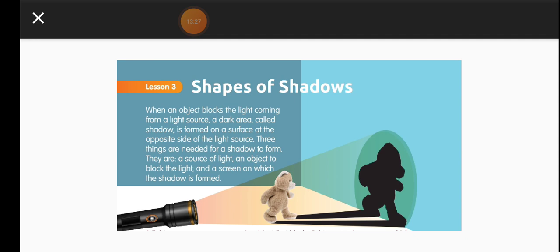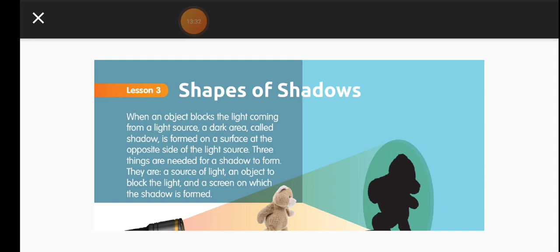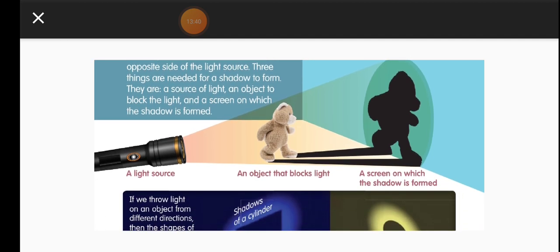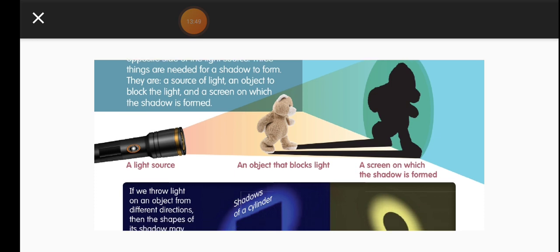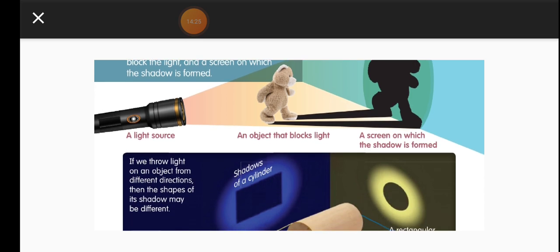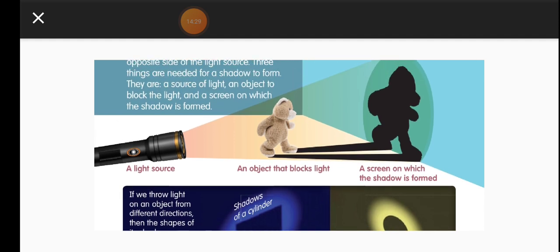When an object blocks the light coming from a light source, a dark area called a shadow is formed on a surface at the opposite side of the light source. Three things are needed for a shadow to form: a source of light, an opaque object to block the light, and a screen on which the shadow is formed. Here you can see how the teddy bear's shadow is formed. A light source is falling from the side — when light falls from the sides, the shadow appears very long and big. If the light falls from the top, the shadows appear shorter. The teddy bear shadow is bigger than the toy itself because the light is falling from the side.